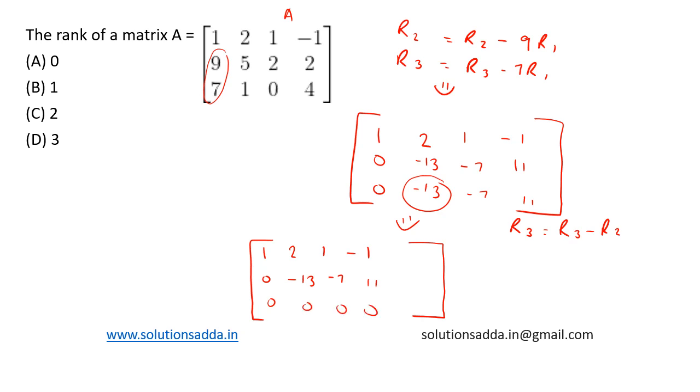Now the number of linearly independent rows are this row and this row. So the rank of a matrix is the number of linearly independent rows. So we have two linearly independent rows, and based on the options, option C, 2, is the right answer.